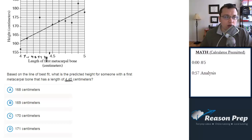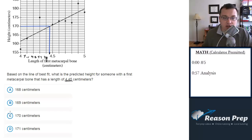So let's go ahead and draw this little line up. This hits the line at that point, which corresponds to a y value, or a height value, of 170. So that would be choice C.